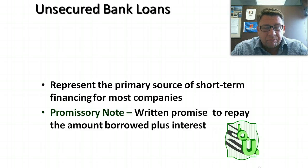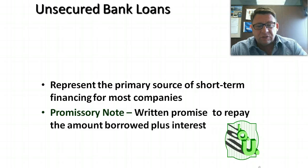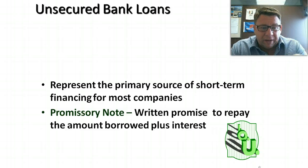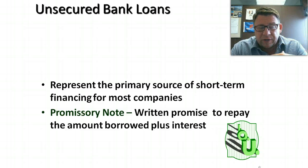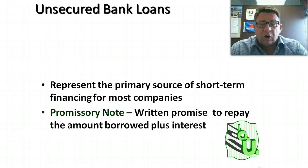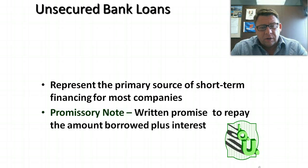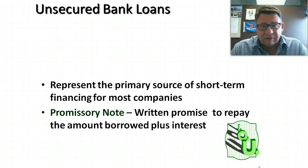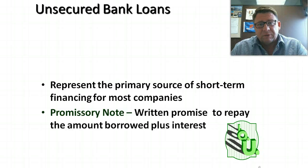Unsecured bank loans are a primary source of short-term financing for most companies. A bank loan contains a promissory note — a written or formal promise to repay an amount borrowed plus interest. For most short-term notes, there is no monthly payment. Unlike an installment loan where you make payments every month, for most businesses short-term notes work differently. If a company borrows $10,000 for five months, they make no payments for the five months. Then when it matures, they pay the $10,000 principal plus interest.